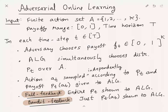The procedure proceeds as follows. In each time step T, the adversary chooses a payoff vector F_T which lies in [0,1]^K — so for each action the adversary chooses a payoff. Simultaneously, the algorithm chooses a distribution P_T over A, the set of actions.